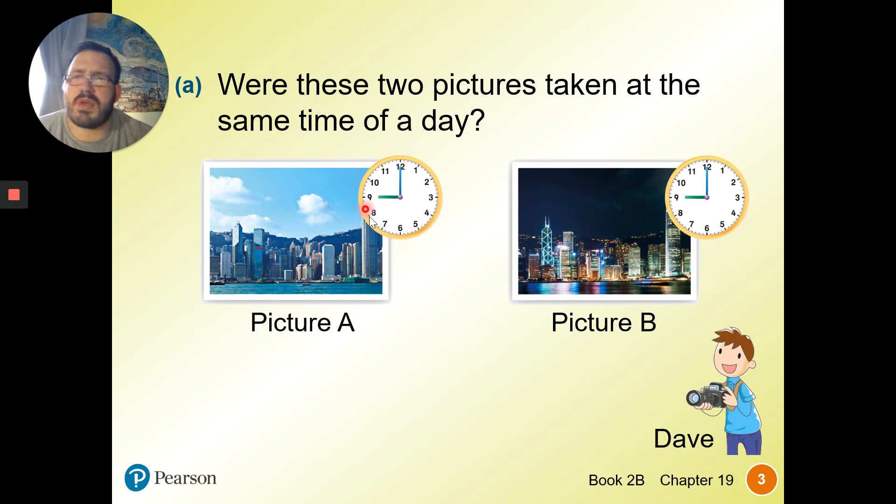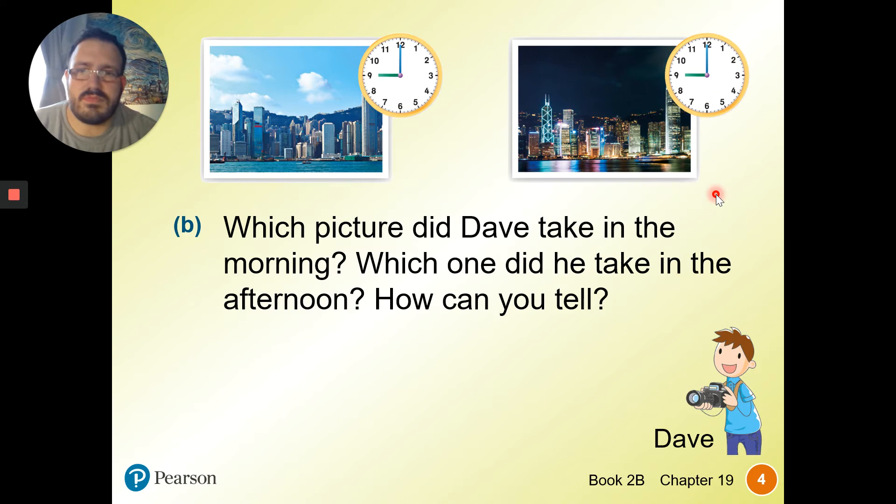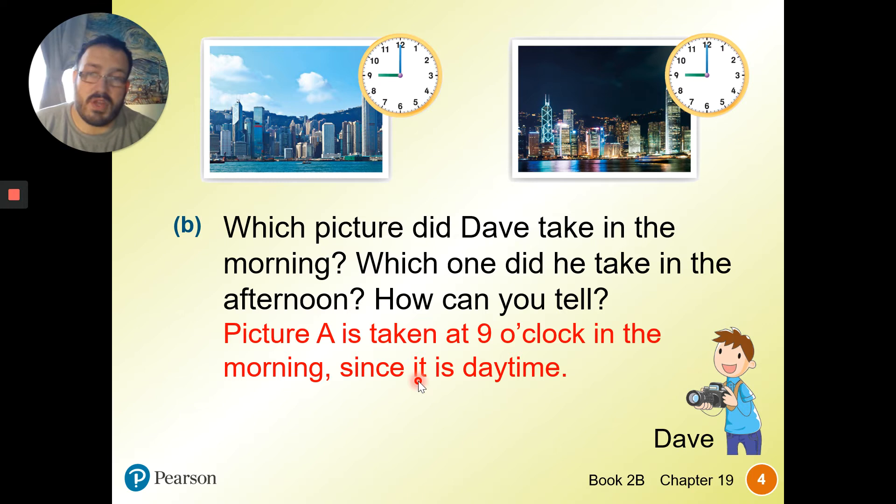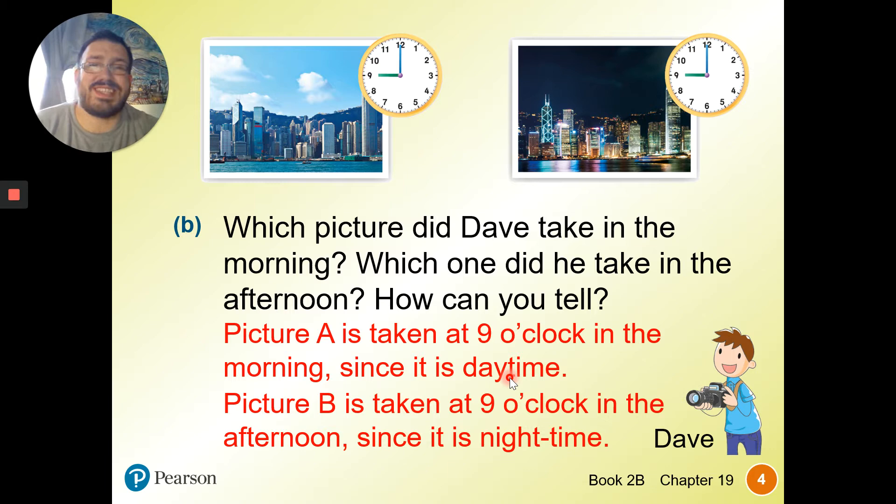If we have a normal clock, remember this is an analog clock. We did that in the last chapter. This is in the daytime, and this is in the evening. So this is 9 o'clock in the morning, and this is 9 o'clock in the evening or afternoon. These are not taken at the same time of day, even though on our clock it says it's 9 o'clock. Picture A is taken at 9 o'clock in the morning since it's daytime, and picture B is taken at 9 o'clock in the afternoon since it's nighttime.